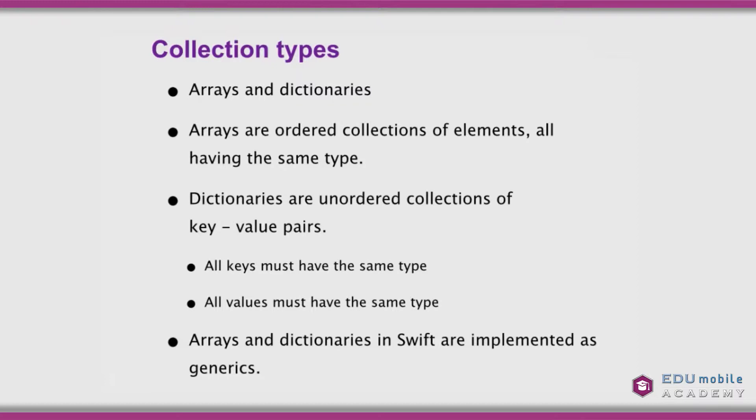Arrays are ordered collections of elements where all of the elements have the same type. This is different from Objective-C's NSArray where all the elements are objects, but they don't all have to be of the same class. Dictionaries are unordered collections of key-value pairs. All the keys have to have the same type and all the values have to have the same type, but the keys and values do not have to be of the same type.